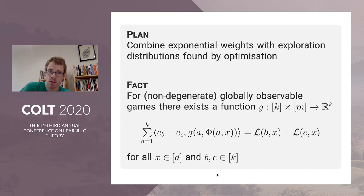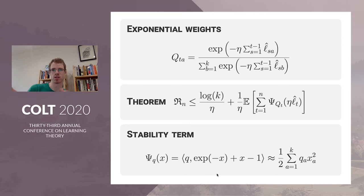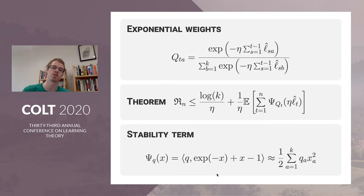We need a couple of facts about exponential weights. First, you have a set of loss estimates: l-hat_{s,a} is an estimate of the loss of action a in round s, usually unbiased up to some shift. If they are unbiased up to a shift — basically estimating differences, adding or subtracting something from all estimates — then you have a regret bound depending on the learning rate, the diameter of the probability simplex with respect to the neg-entropy (that's log k), and a stability term measuring the variance of your loss estimates. This stability term can also be written as a Bregman divergence, and via a Taylor expansion it's approximately equal to a variance calculation.